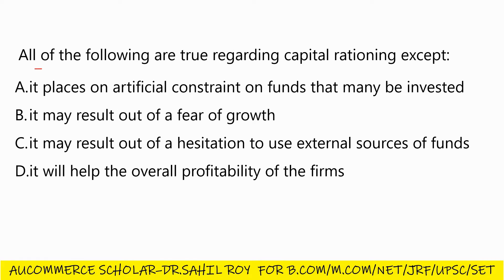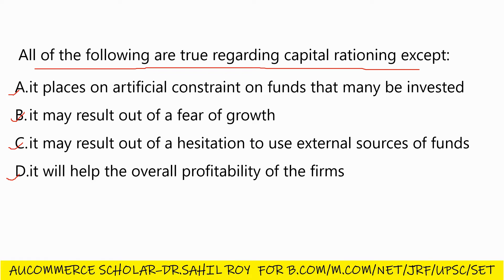Our next question: all of the following are true regarding capital rationing except — Option A: it places artificial constraints on funds that may be invested; Option B: it may result from a fear of growth; Option C: it may result from hesitation to use external sources of funds; Option D: it will help the overall profitability of the firm. The correct answer is Option D.